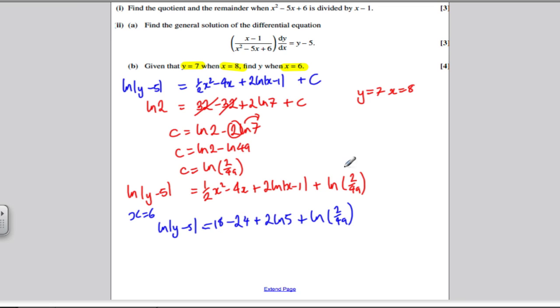And we get that whole side is equal to minus 5.9797, etc. Keep that full answer in your calculator. Take exponentials of both sides.